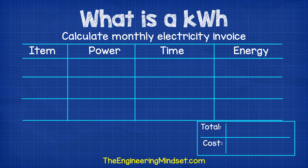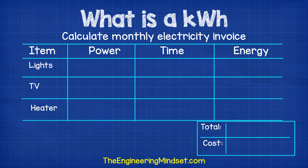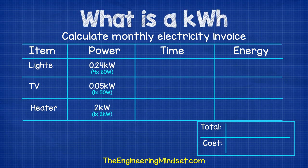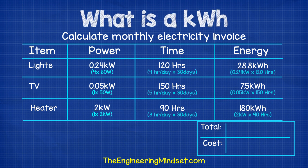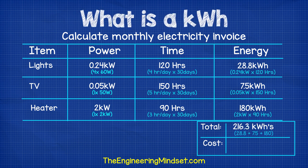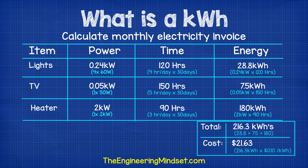How about calculating our electricity consumption for the month? We need to create a table for all the electrical items in the building, then note down their power. Remember to quantify how many of each item you have and ensure that each item is rated in kilowatts. Then we need to calculate how many hours per month they will be switched on for. From there, we can calculate the electricity consumption for each item using the energy equals power multiplied by time formula. Once you've done this for all the items, just add up the values in the energy column, and this will give you your total kilowatt hour consumption per month.